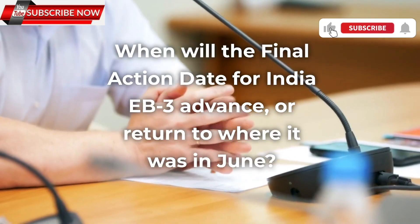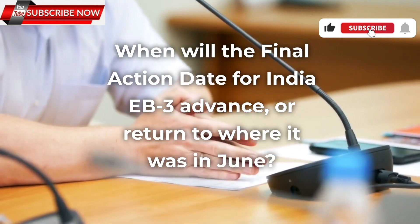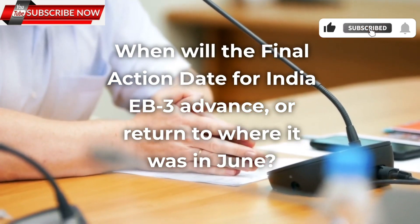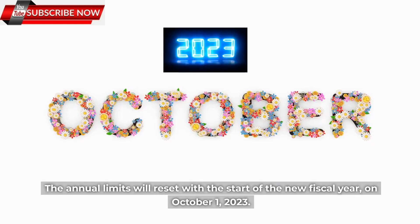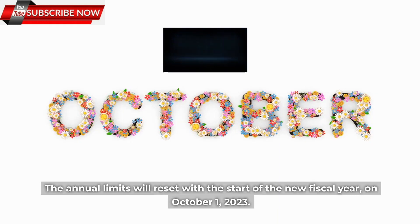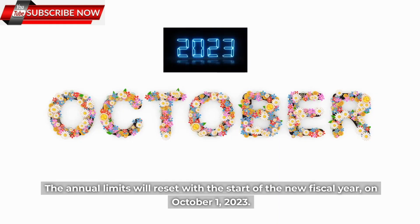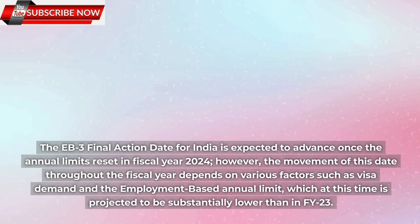When will the final action date for India EB3 advance, or return to where it was in June? The annual limits will reset with the start of the new fiscal year. On October 1, 2023, the EB3 final action date for India is expected to advance once the annual limits reset in fiscal year 2024.